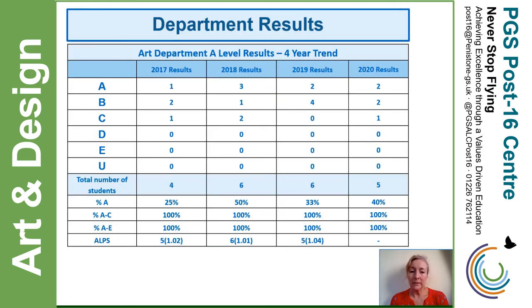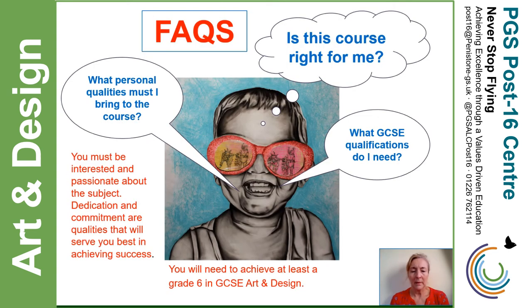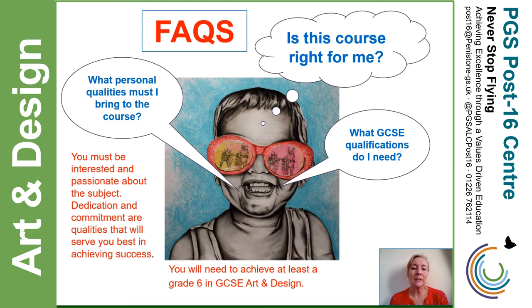We have a very good track record of results. It's rare for a student to get less than a grade C and that hasn't happened for a number of years. Most students will achieve their ALPS targets and we have an excellent success record for any students going on to higher education for art and design. You really must be interested and passionate about the subject because dedication and commitment are the qualities that will serve you best. We look for some ability in art and hope that you will have a grade 6 at GCSE level, but it really is that interest and drive that will get you the best possible grade.